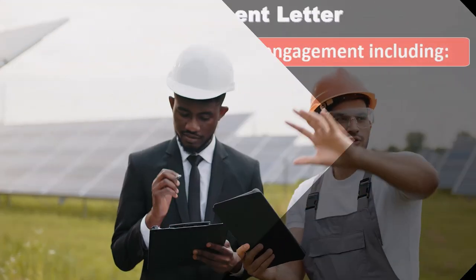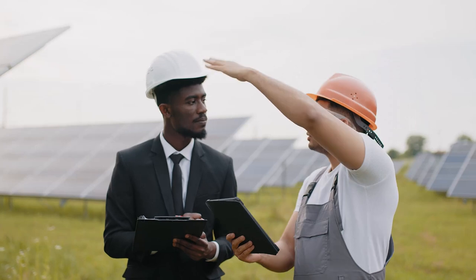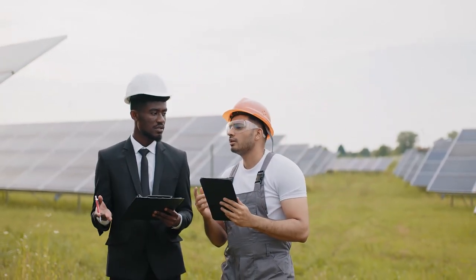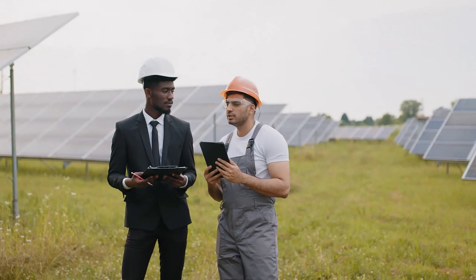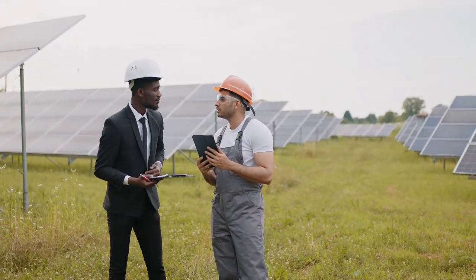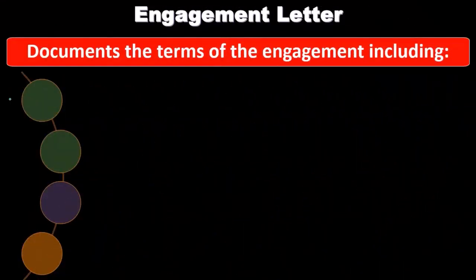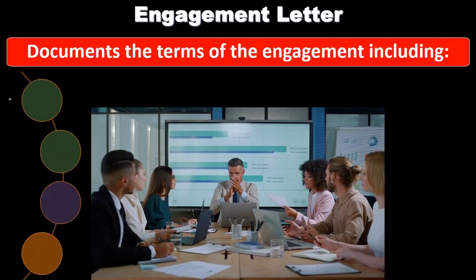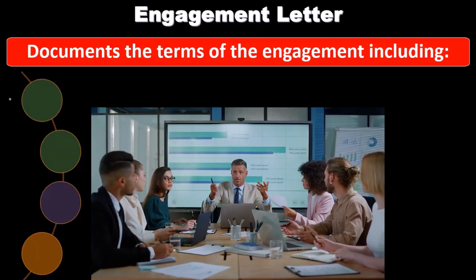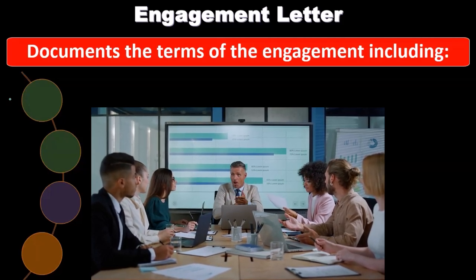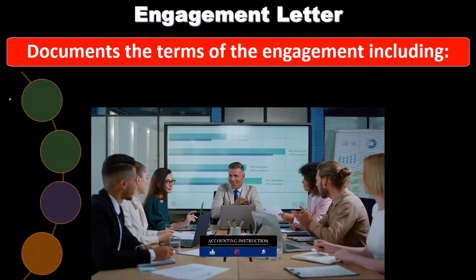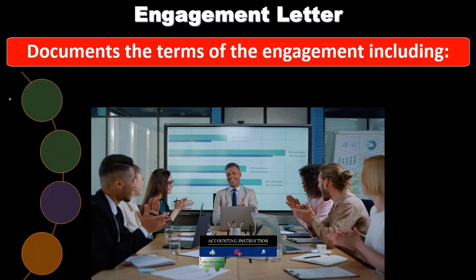If the terms aren't set up well, it's very possible for the two parties to not have a shared understanding of what's going on or what's expected. It's also possible for 'scope creep' to happen — the client may slowly ask for more types of services and we may provide them without reassessing the engagement terms or billing appropriately.